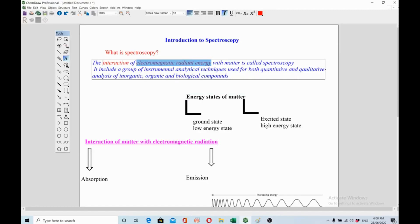If you look at the energy states of matter, this is very basic. It has two main stages: one is ground state and another is excited state. The ground state is also called low energy state and high energy state.